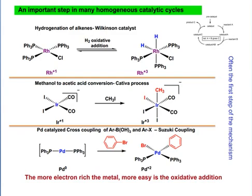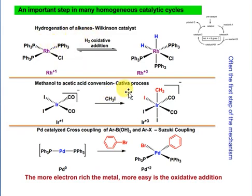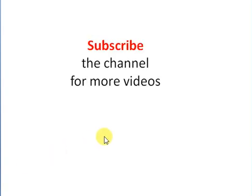There are some important homogeneous catalytic processes where oxidative addition occurs: hydrogenation of alkenes by the Wilkinson catalyst involves addition of H2 as an example of oxidative addition; in the Cativa process, addition of CH3I is an example; and in Suzuki coupling, this step is also an example of oxidative addition. Thank you so much for watching — if you're liking the video, please subscribe to the channel.